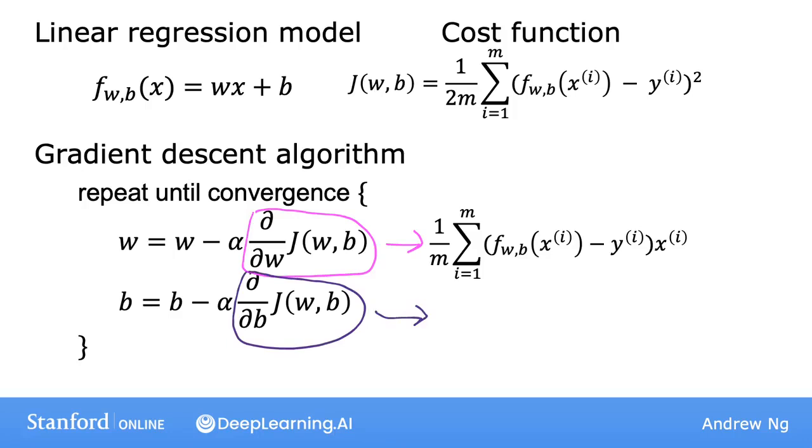And the derivative with respect to b is this formula over here, which looks the same as the equation above except that it doesn't have that xi term at the end. And if you use these formulas to compute these two derivatives and implement gradient descent this way, it will work.